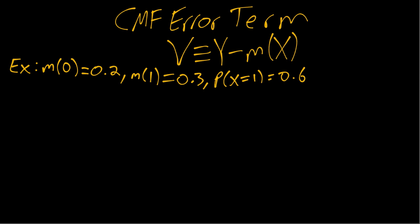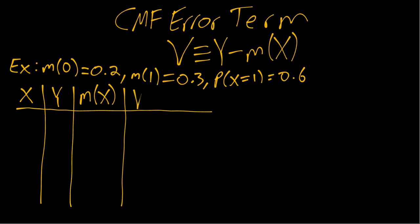So we could think about making a table of all the possible values of these different random variables. We'll assume both x and y are binary in this case. So then we just have four possibilities in terms of x and y.